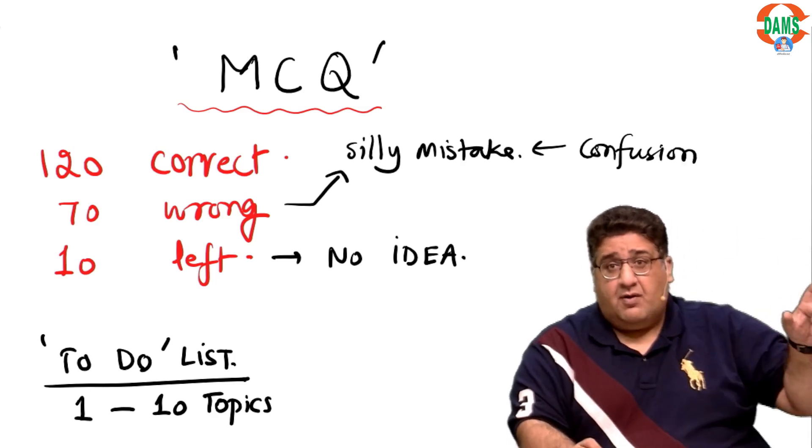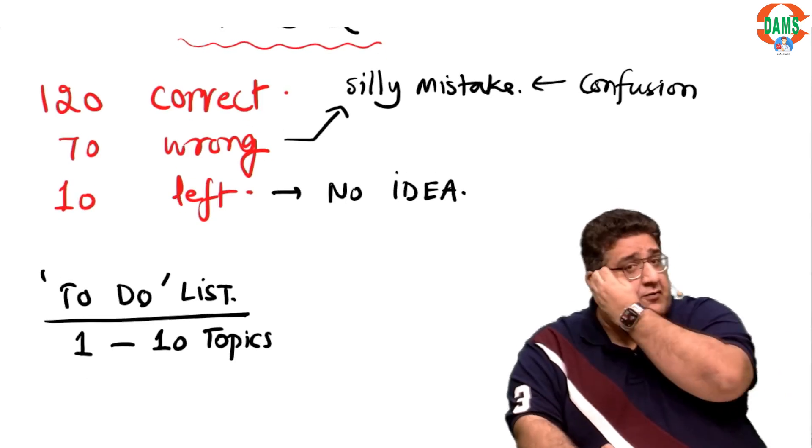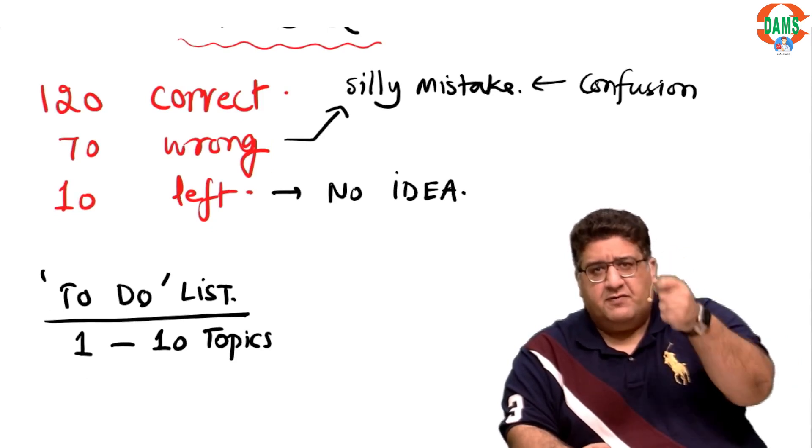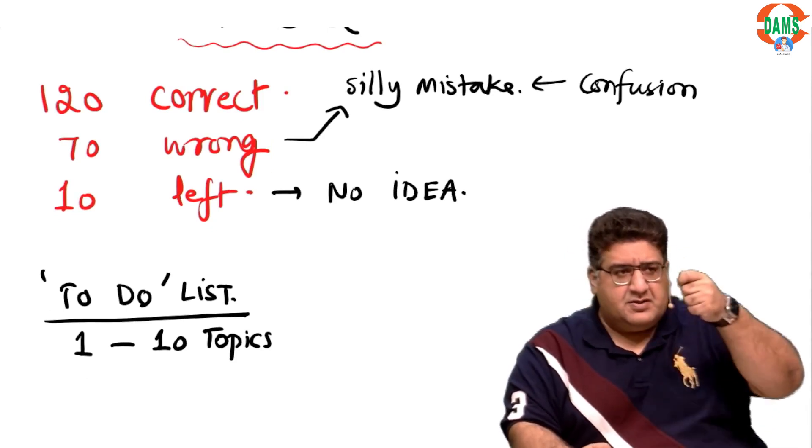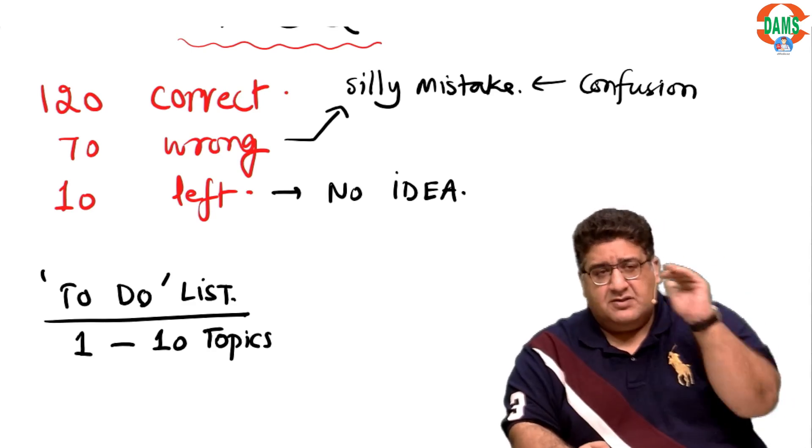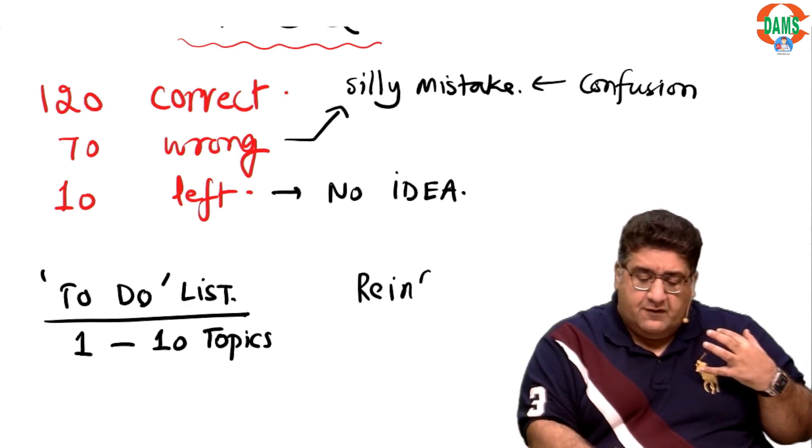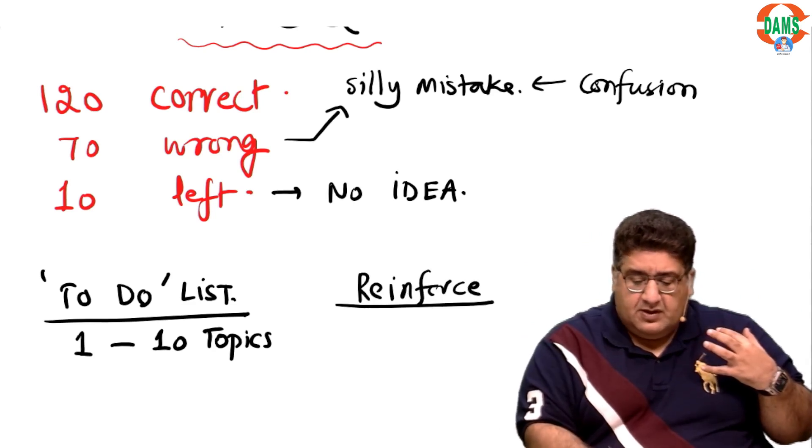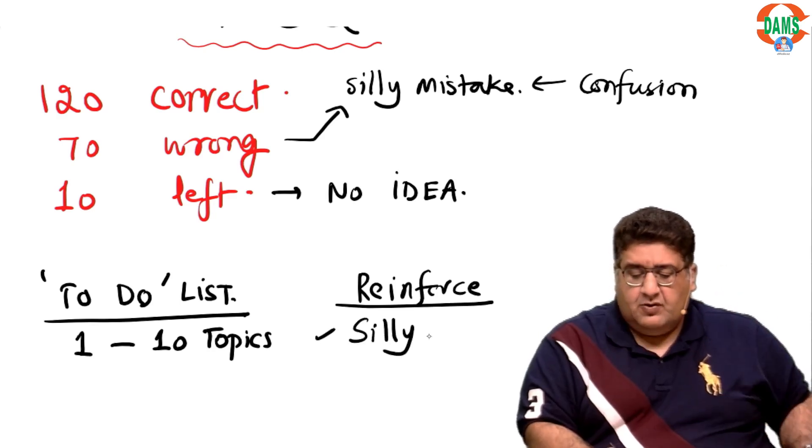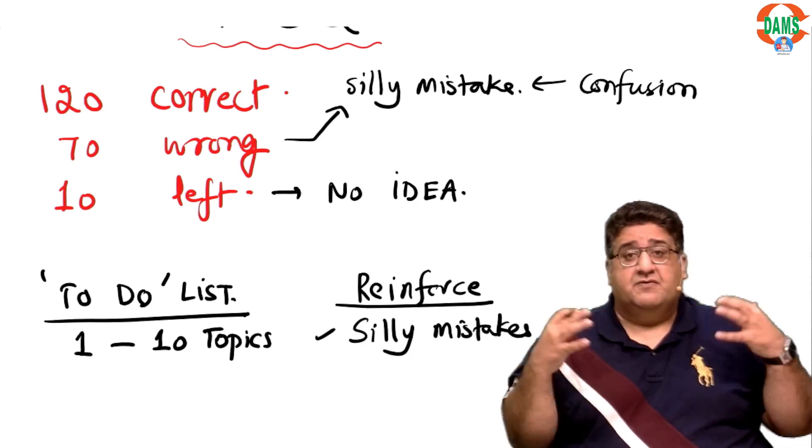It is not a confusion about the topic, so it should not be a part of your to-do list. It is not a confusion about the subject. It is just a confusion between two statements, between two options, between just one concept that whether it is A or whether it is B. There is no difference like A and Z, it is just A and B. So you have to reinforce the facts or the data or the correct answers. You have to work on the silly mistakes. You have to reinforce those facts again and again.